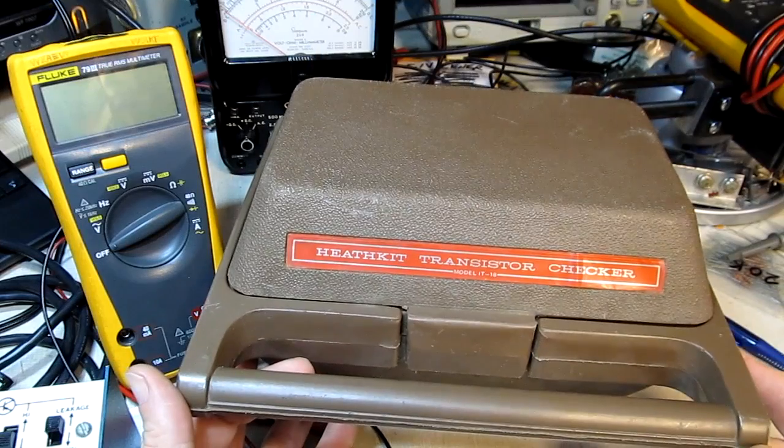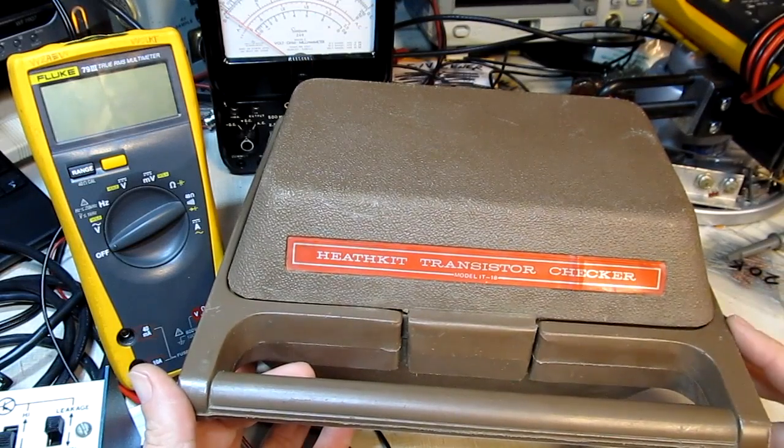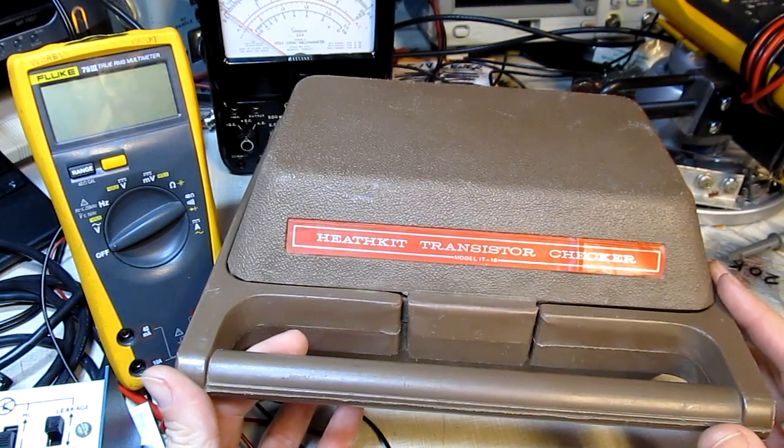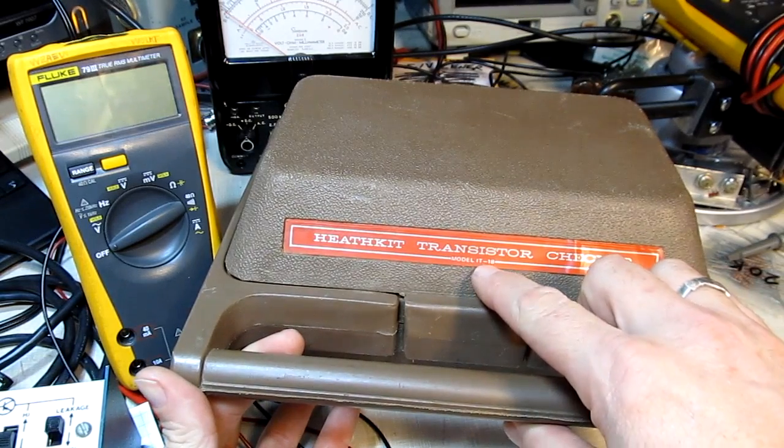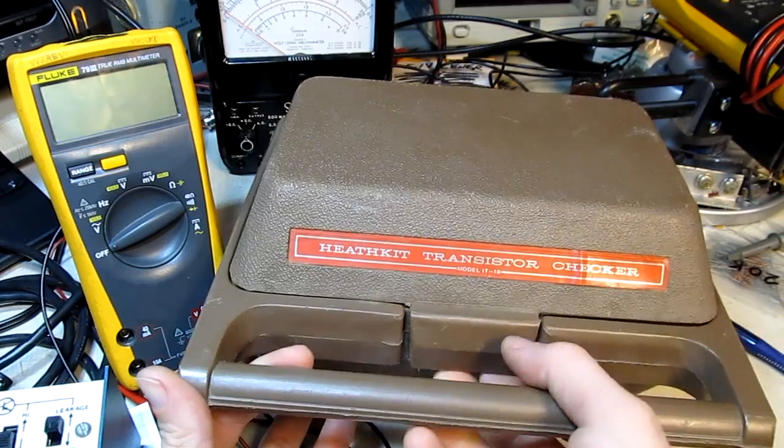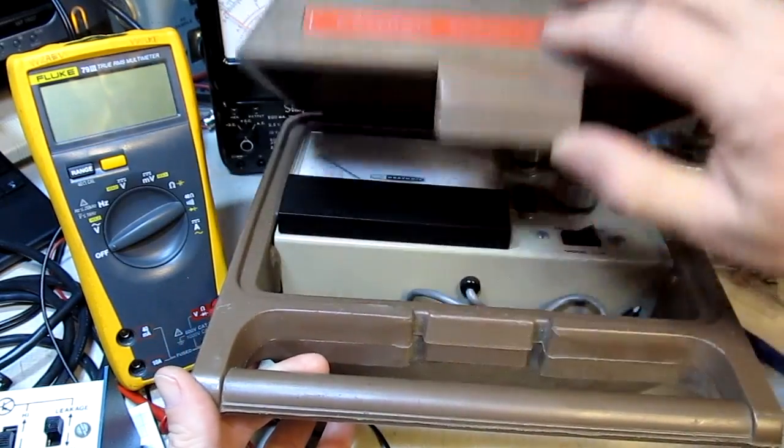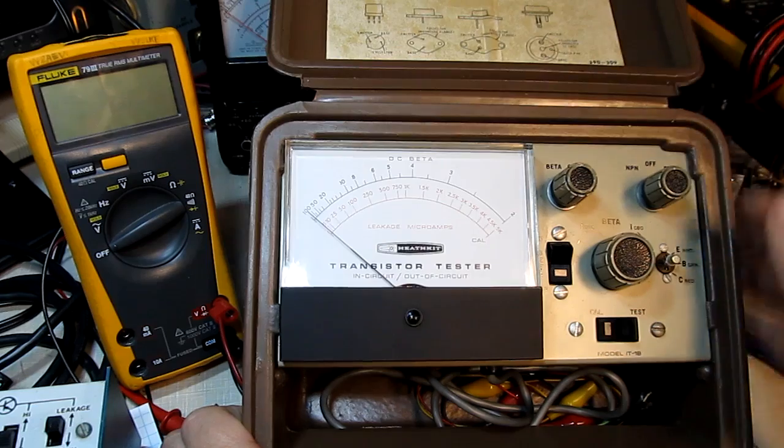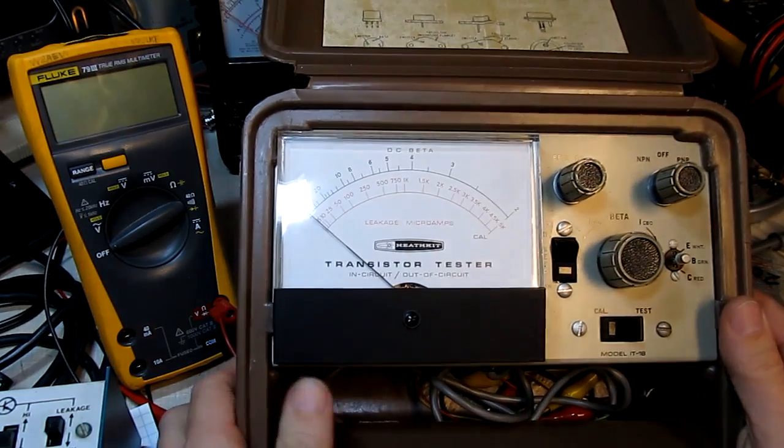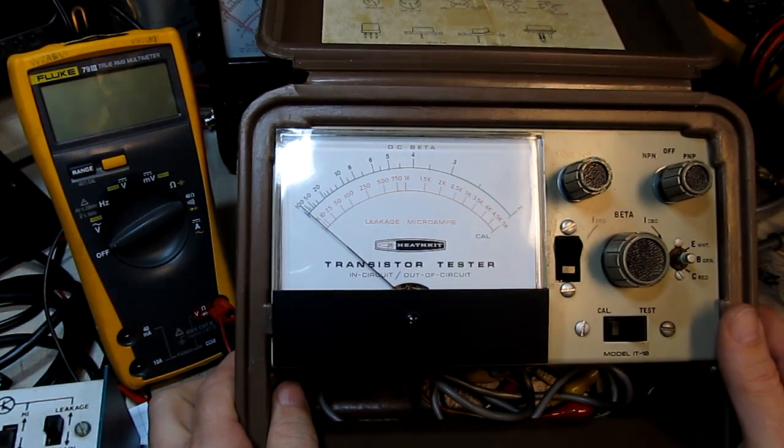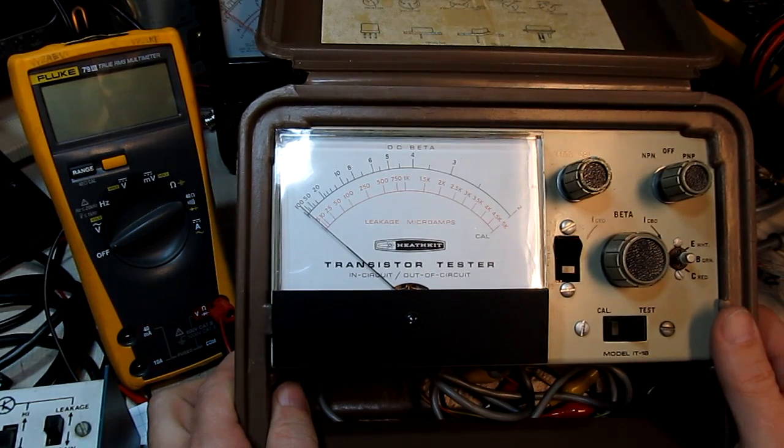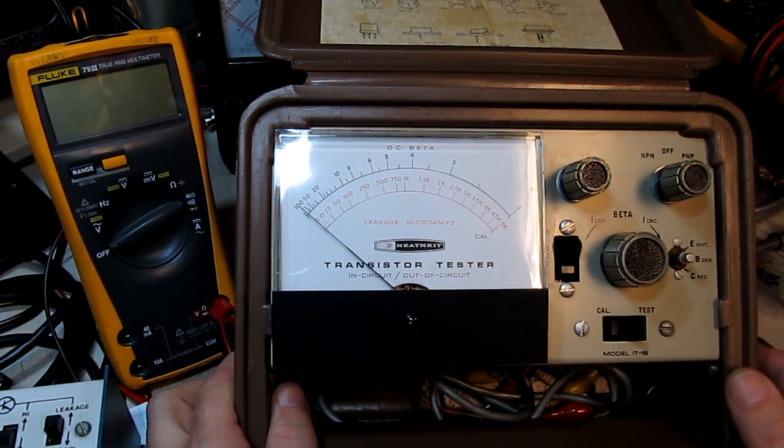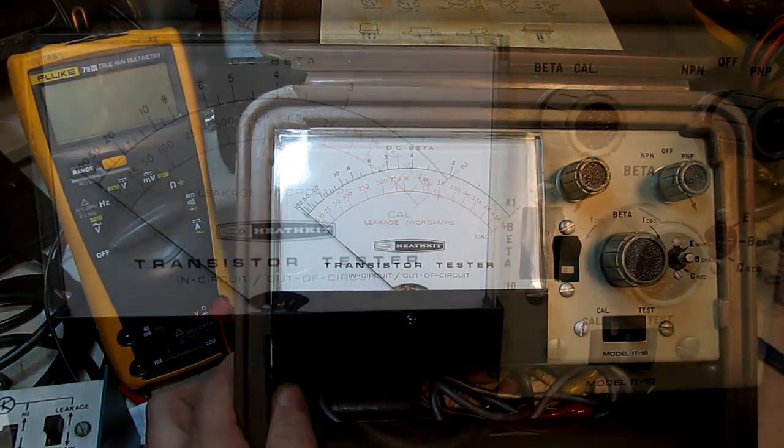This is another Heathkit transistor checker from about that same era, late 70s or so. And again you could probably find these pretty inexpensively on eBay etc. This happens to be a model IT-18. And this takes the transistor checking to a little bit of the next level again beyond that simple transistor checker. Here we've got the ability of measuring gain of the transistor and get actually a number for a current gain like the beta or HFE of the transistor and also get a measure of leakage current directly. So let me show you how you use this.